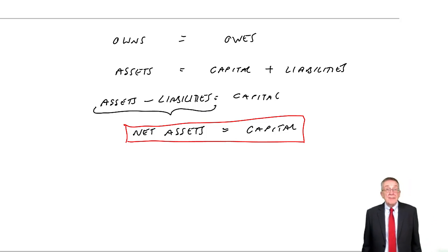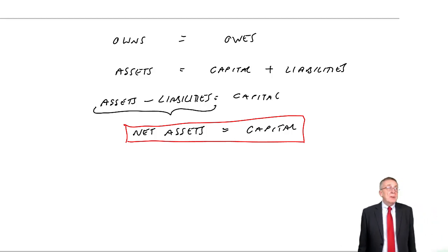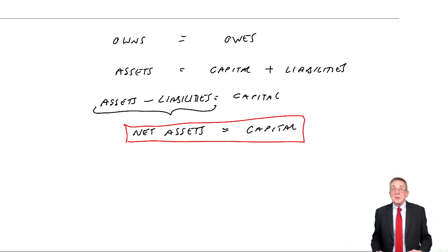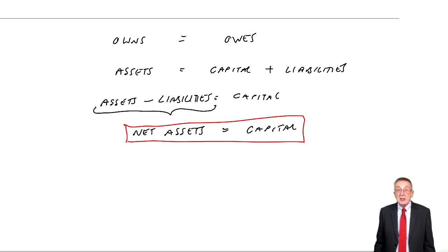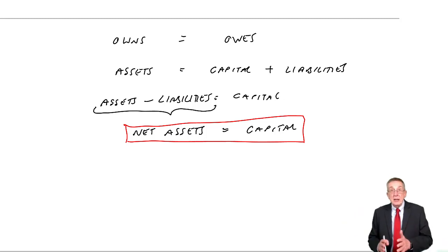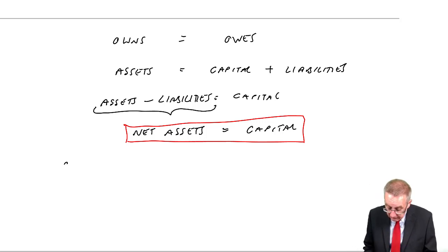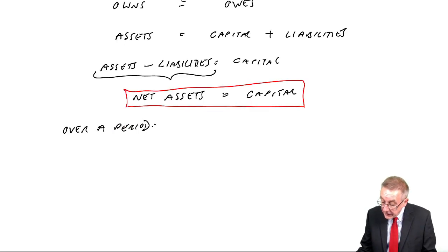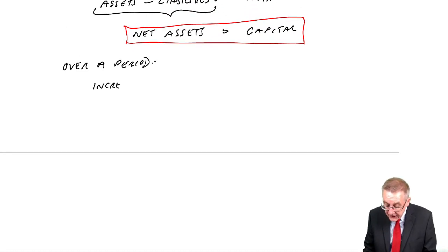Think back to our first lecture: although at each stage those two were equal, they both kept changing. Before we even did the first transaction, net assets was zero and capital was zero. The owner put in 10,000 — the net assets were 10,000 in cash, and the capital was 10,000. They keep changing, but at any point in time the two are equal. We can go one step further: over a period — whether a month or a year — the increase in net assets will equal the increase in capital.